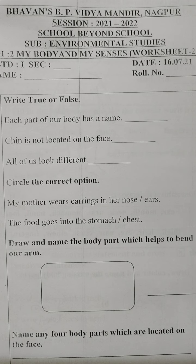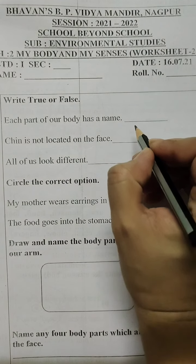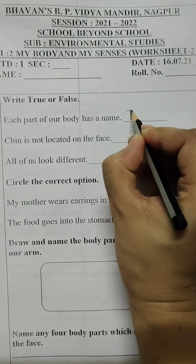Now students, as we have studied in the lesson, we will solve a few questions based on it. The first question is: write true or false. Each part of a body has its name? Yes, it is absolutely true, so we will write T for true.